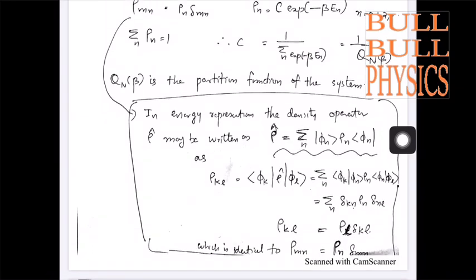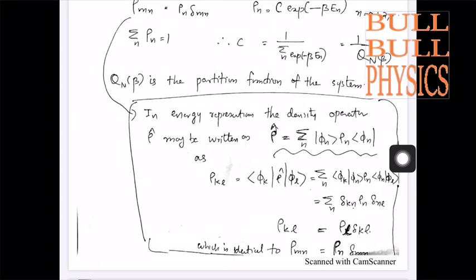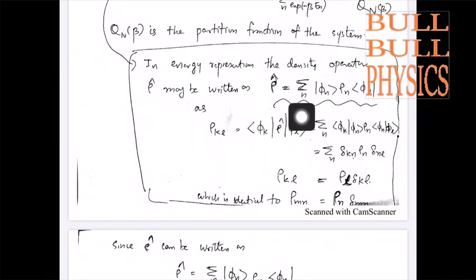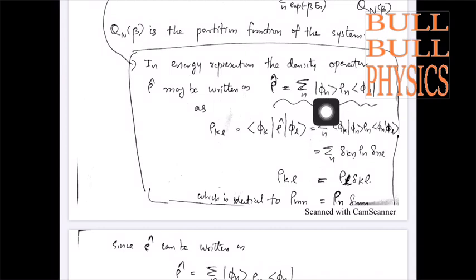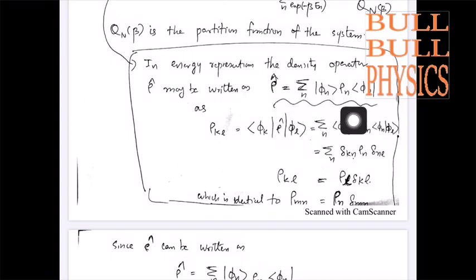Now, in the energy representation, the density operator can be written in this form: ρ = Σ_n |φ_n⟩ ρ_n ⟨φ_n|. This is the notation used in quantum mechanics.